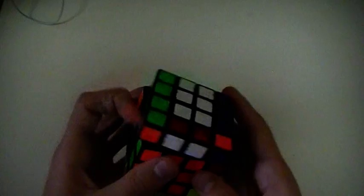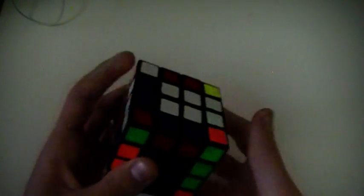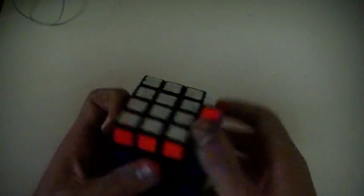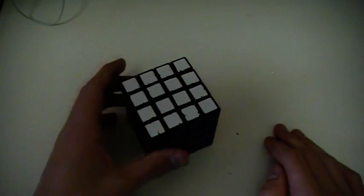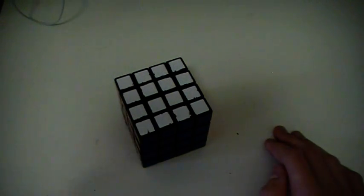Alright, so yeah, I hope that helped some of you. It just shows how I solve 4x4, centers and edges. So the edge method is called 3, 2, 2, 2, 3, which is self-explanatory. Alright, see ya.